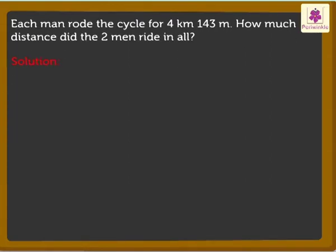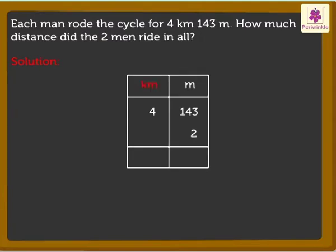First, we write the numbers in the kilometer and meter columns. Then, we first multiply the meters and then the kilometers like this.